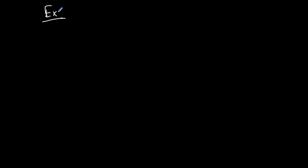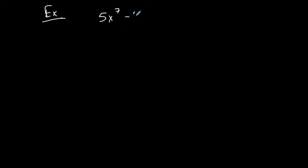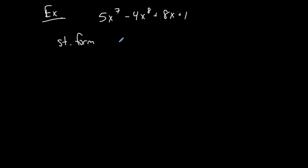Let's do a quick example: 5x to the seventh minus 4x to the eighth plus 8x plus 1. First, is this a polynomial? Yes, because none of the exponents are negatives, fractions, or anything unusual — just whole numbers. Is it in standard form? No, because we're not leading with the highest exponent. In standard form, we lead with the highest exponent, giving us: negative 4x to the eighth, plus 5x to the seventh, plus 8x, plus 1. We don't need to represent missing degree terms — that's okay.